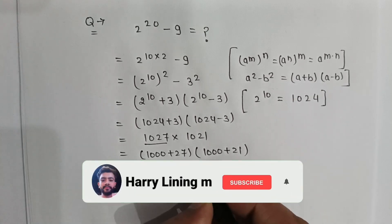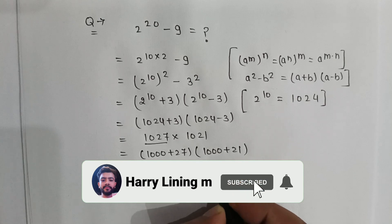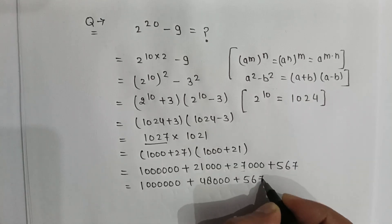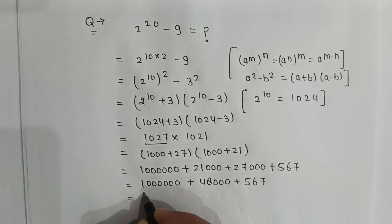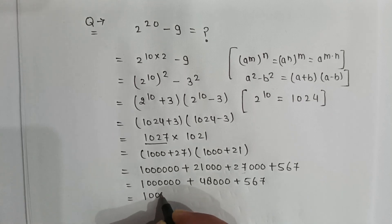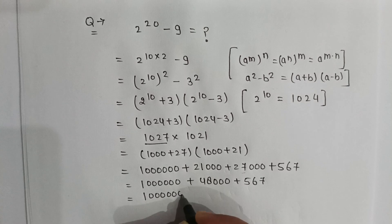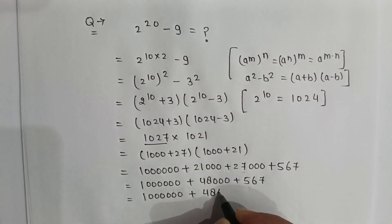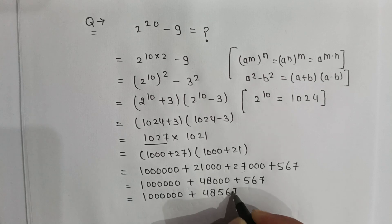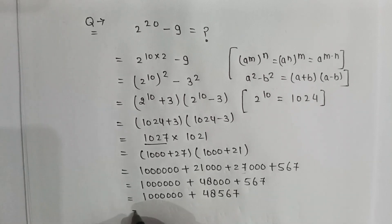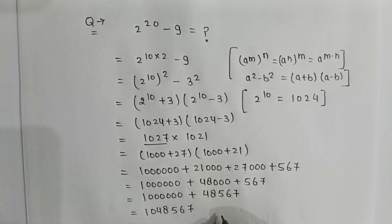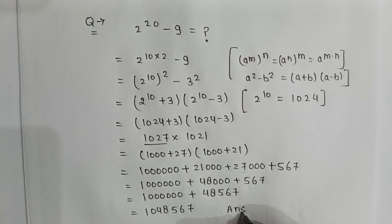So it will be 1,000,000 plus 48,567, which gives us 1,048,567. So this is our answer. Thank you, friends.